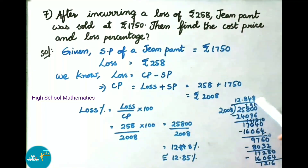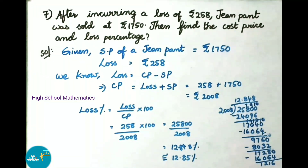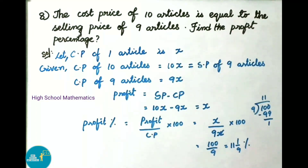The answer is 12.848 percent, which is approximately 12.85 percent. Therefore loss percentage on selling jean pant is 12.85 percent.